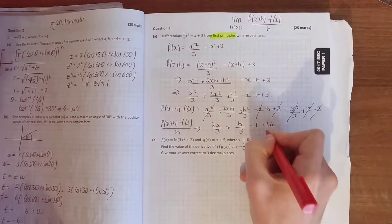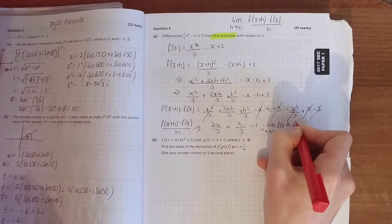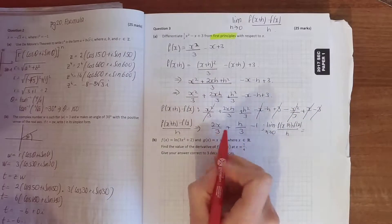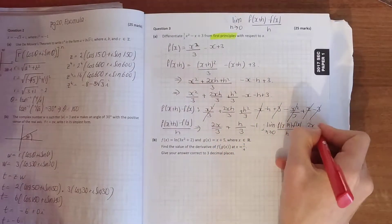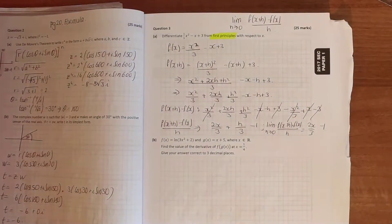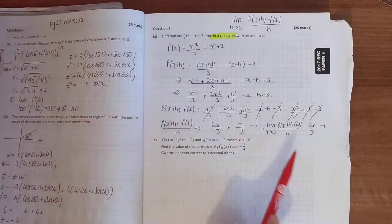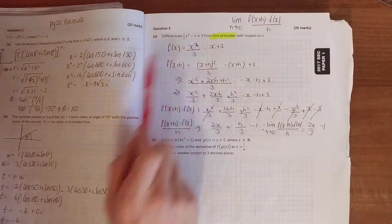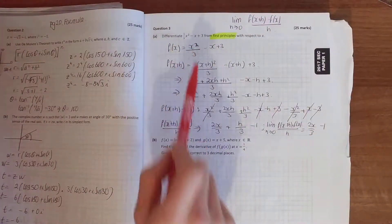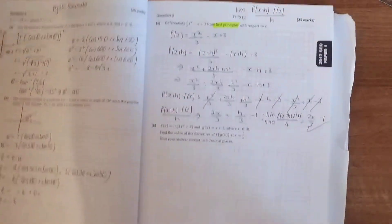So, the limit as h goes to 0 of all that. That has no effect. 2x over 3. This disappears. Minus 1. Now, you can always check your answer. We know from differentiation, all you've got to do is multiply down to the power. So, 2 multiplied by a third is 2 thirds, which we have there. Drop the power by 1, which is x. Minus x becomes 1. We're right.